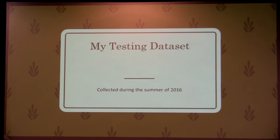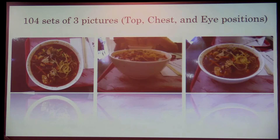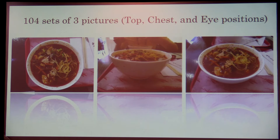So I want to talk about food. During the summer, I built an Android app and gave it to a bunch of people, asking them to take pictures of their breakfast, lunch, and dinner for a couple of weeks. I ended up with 104 sets of three pictures each — 312 pictures total. The first picture is taken from the top, the second at chest angle, and the third at eye level. I wanted to test whether different angles affect the tags and probabilities — and it does. The tags and probabilities are very, very different.